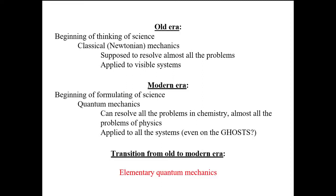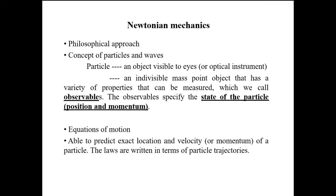The transition from old era of classical physics to the modern era of quantum physics is the era of elementary quantum mechanics. The basis of Newtonian mechanics was philosophical. In this, there were two types of entities: the particle or wave. Both these entities are entirely different.